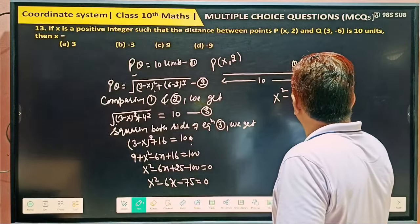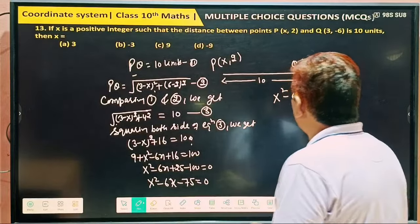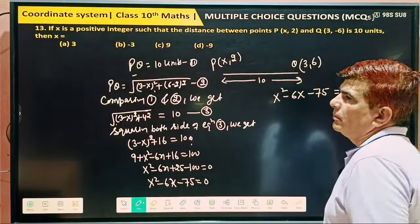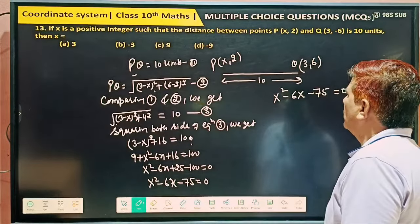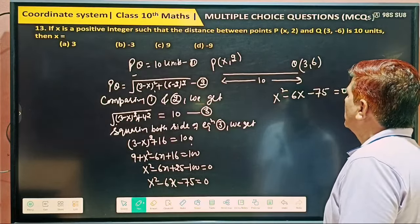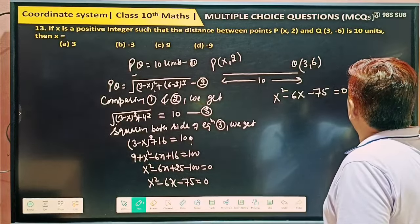So find out the value of x. x square minus 6x minus 75 is equal to 0. So find out the value of x splitting the middle term.